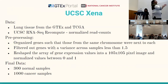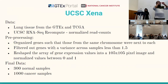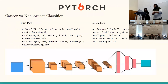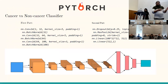We reshaped the array of gene expression values into a 105 by 105 pixel image. Originally you have a whole set of gene expression values — each sample across genes has a specific value — and we reshaped it into a square so we could use it to train our network. Those values were normalized between 0 and 1. Our final dataset had 300 normal samples and 1,000 cancer samples.